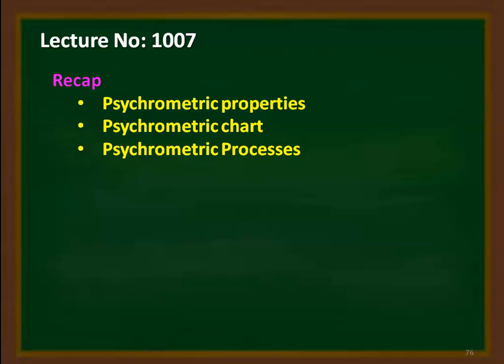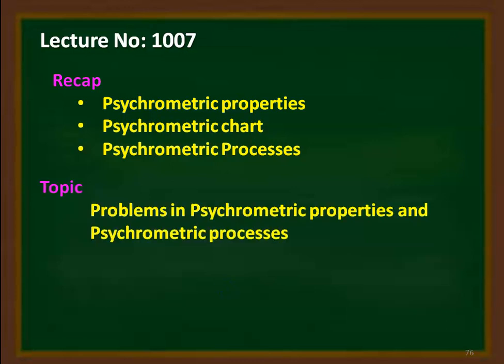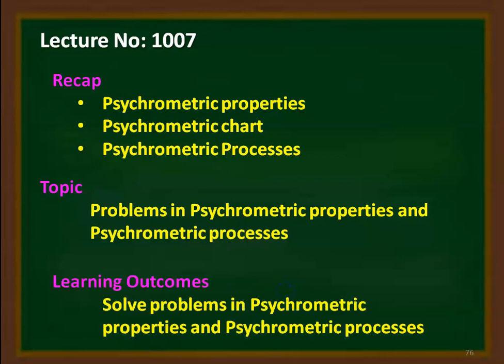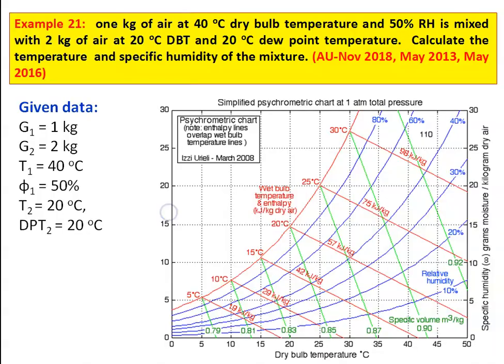Now we continue with problems in this lecture. The topic here is problems in Psychrometric Processes and Properties, and the learning outcome for students. At the end of the lecture, the student will be able to solve problems on Psychrometric Processes and Psychrometric Properties. We take Example number 21.